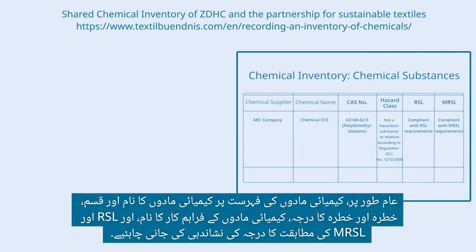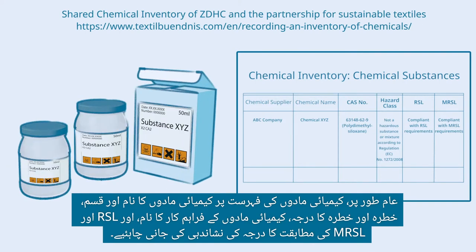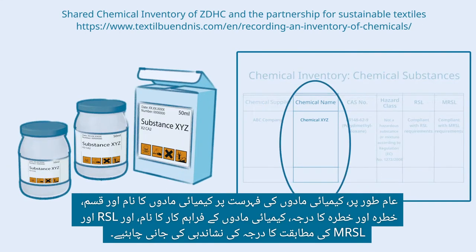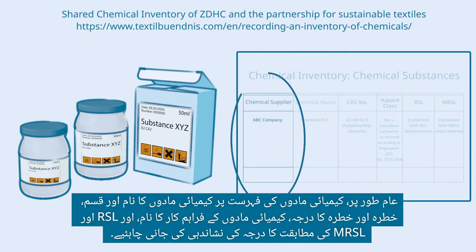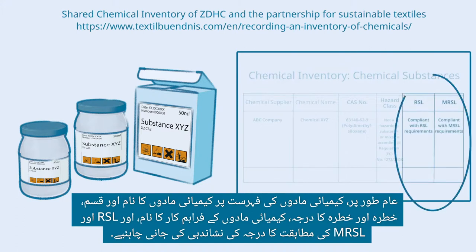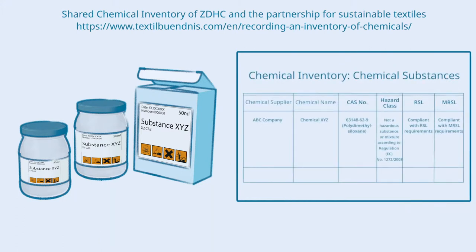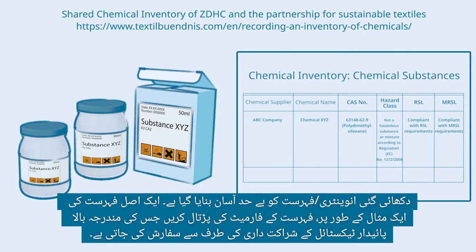Typically, the chemical inventory should indicate the name and type of chemical substance, the hazard and hazard class, the name of the chemical supplier, and the level of conformance to RSL and MRSL. The shown inventory is strongly simplified. For an example of an actual inventory, check the inventory format recommended by the Partnership for Sustainable Textiles above.